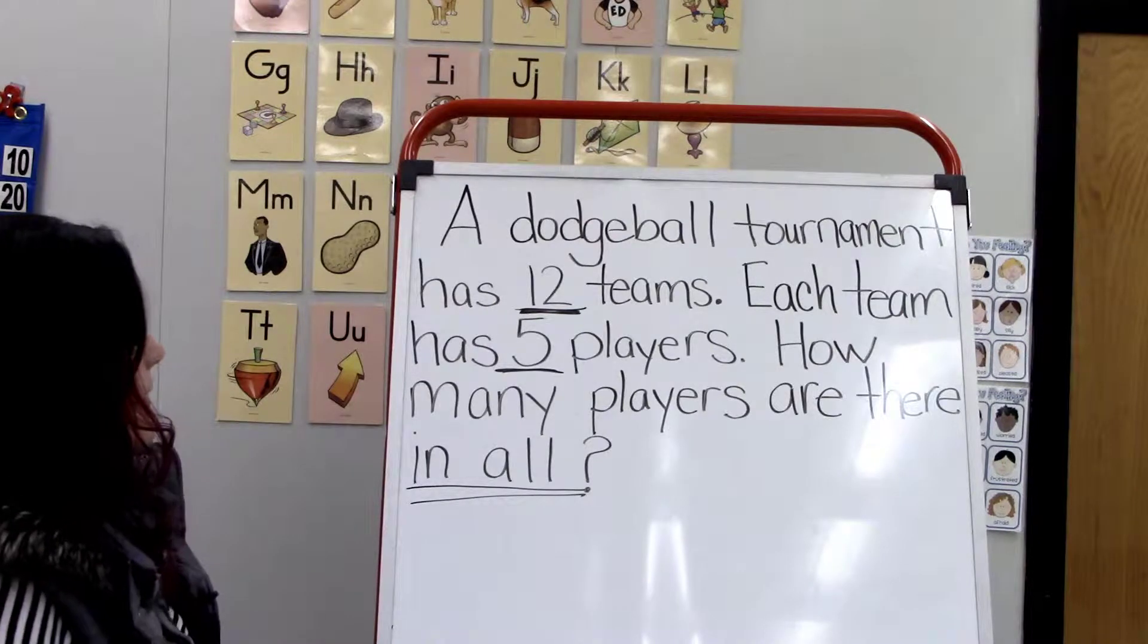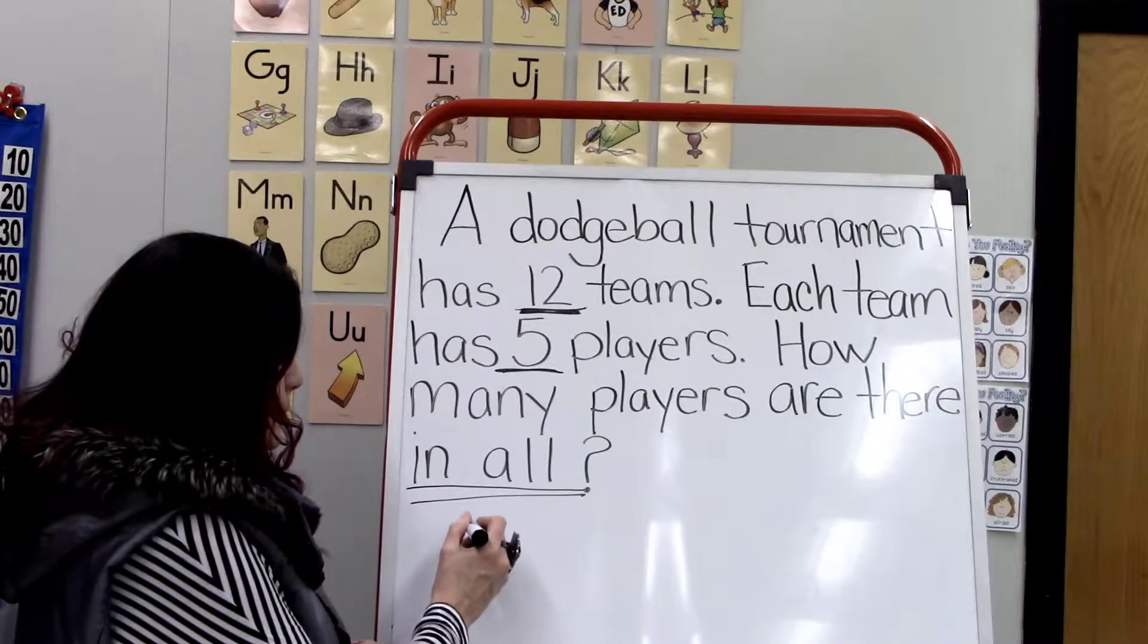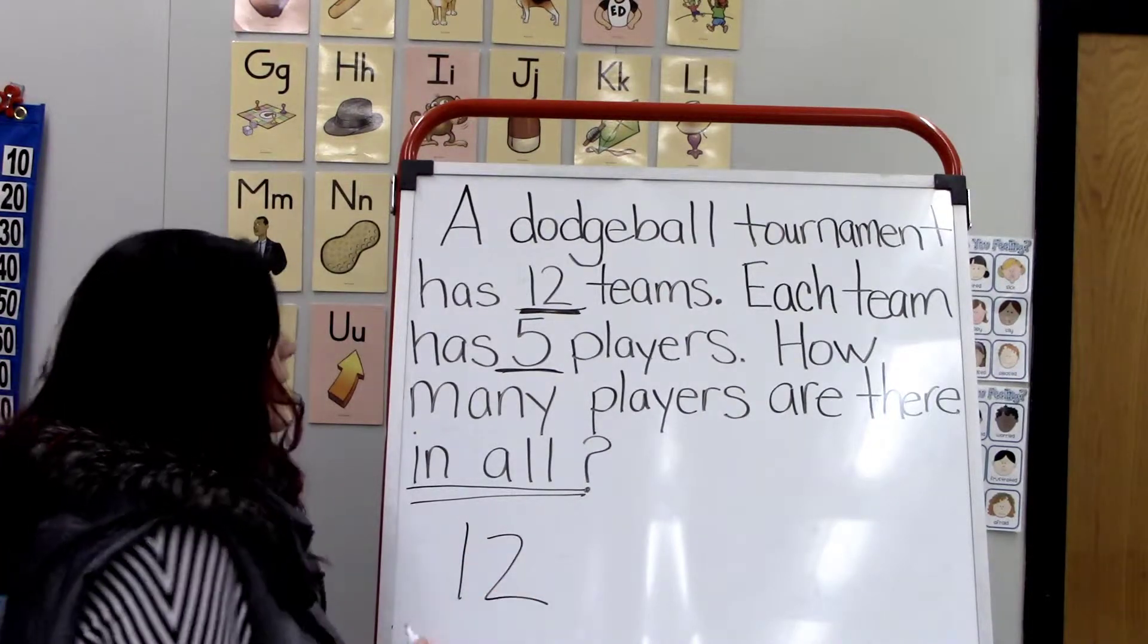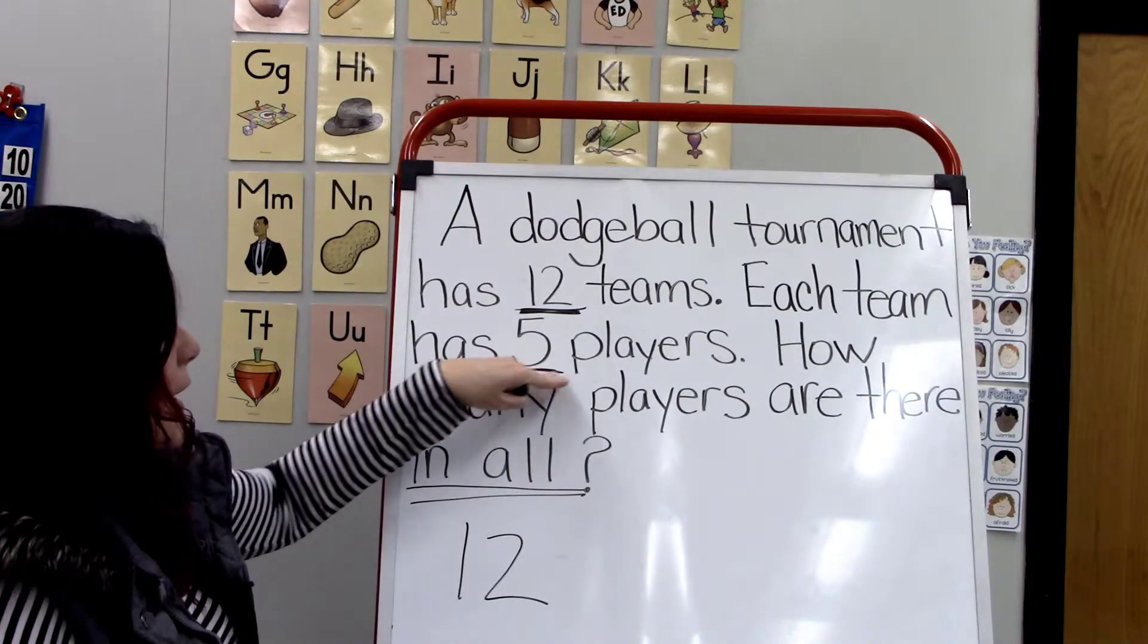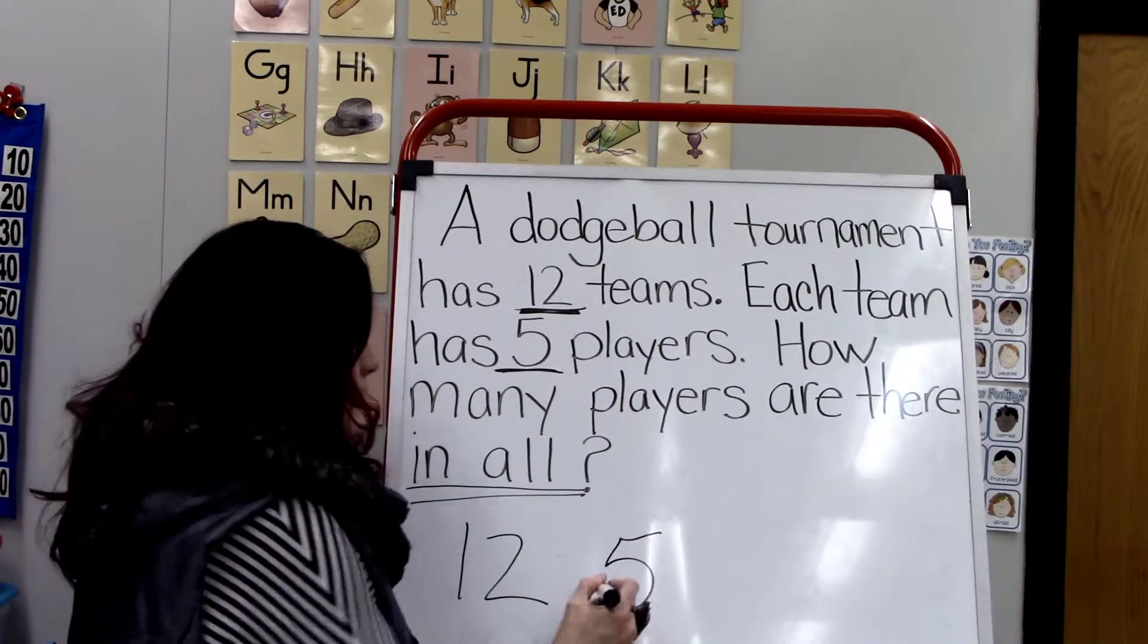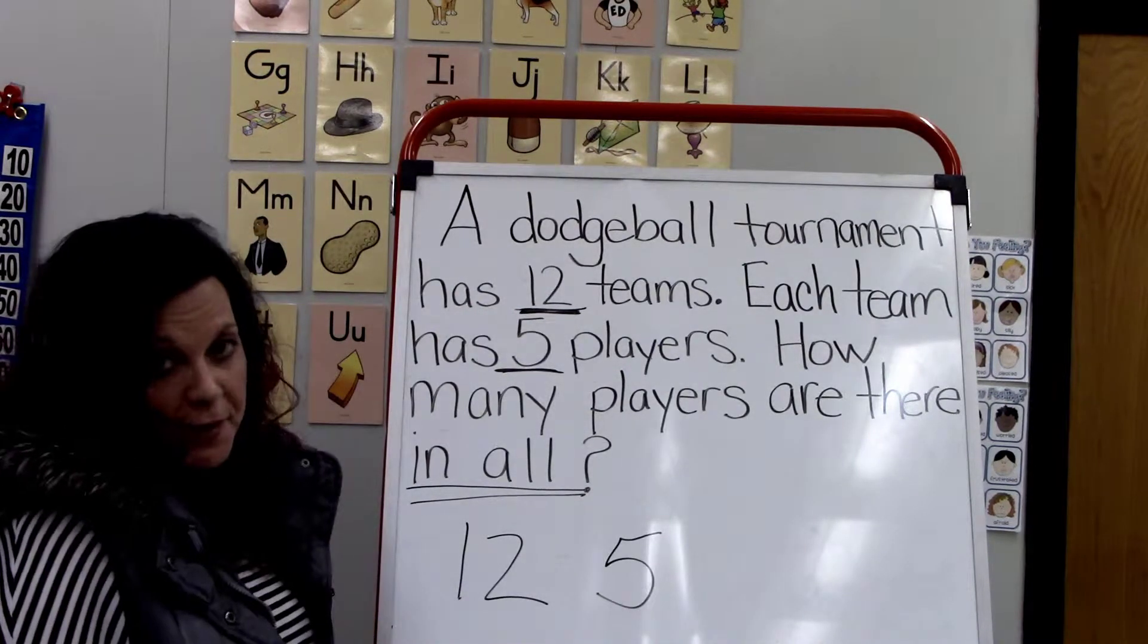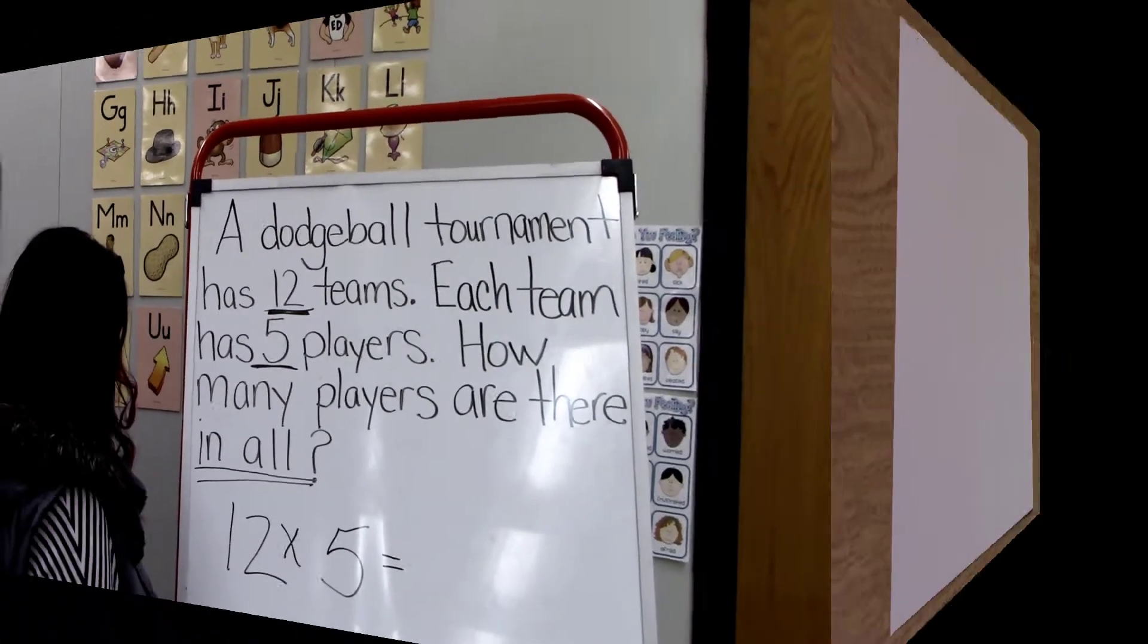Since this problem is telling us we have 12 teams and each team consists of 5 players, I believe the most efficient way to solve this problem is to multiply. I need to solve the problem 12 times 5.